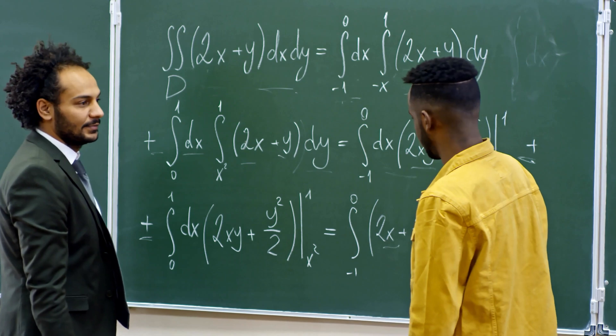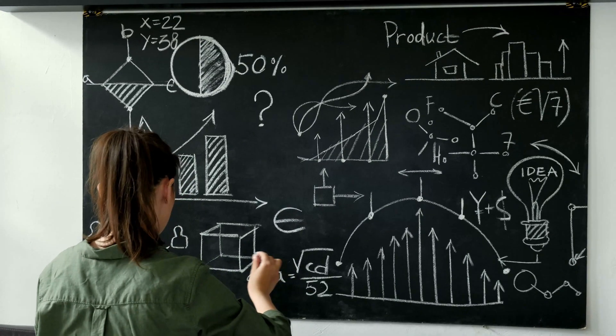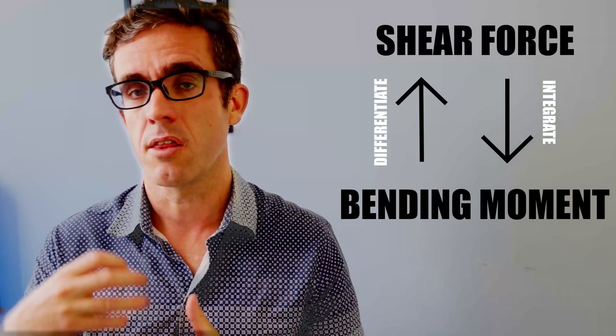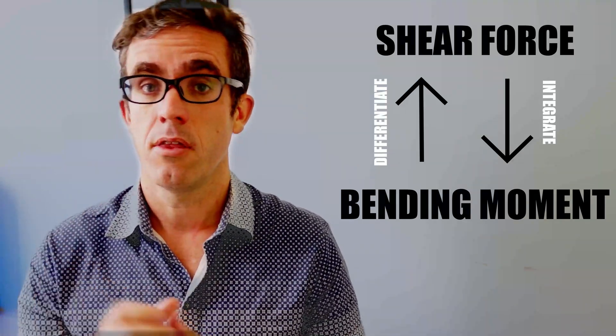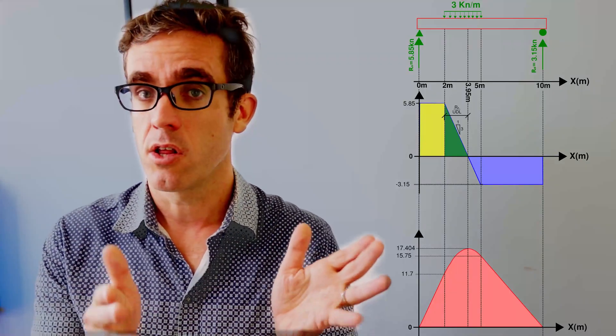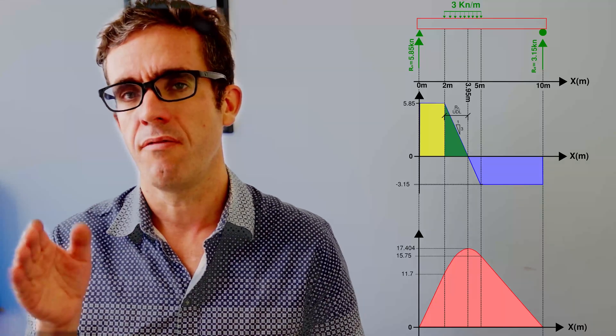Another concept used quite often is integration and differentiation — not so much deriving formulas, but understanding the relationships between them: the area under the curve, or the gradient of the line when differentiating. This gives a lot of information when analyzing a structure. For example, with bending moment and shear force diagrams: if we integrate the shear force diagram we get the bending moment diagram, or if we differentiate the bending moment diagram we get the shear force diagram. The area under the shear force curve should equal the corresponding value on the bending moment diagram.